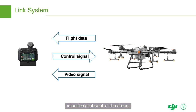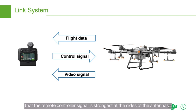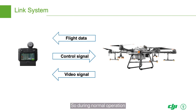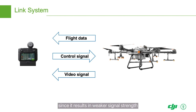The link system, or remote control system, helps the pilot control the drone and also enables image and flight data transmission. Please note that the remote controller signal is strongest at the sides of the antennas. During normal operation, avoid pointing the antennas towards the drone since it results in a weaker signal strength.